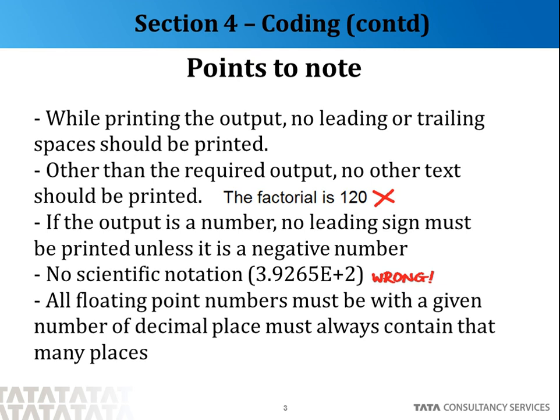If the output is a number, do not unnecessarily force any leading sign. For example, if a number is 20, do not try to force your program to print plus 20. Do not print in any scientific notation. All floating point numbers must be within a given number of decimal places. If the program description says that you should print the output with two decimal precision, then you should program in such a way that there are two digits after the decimal point.